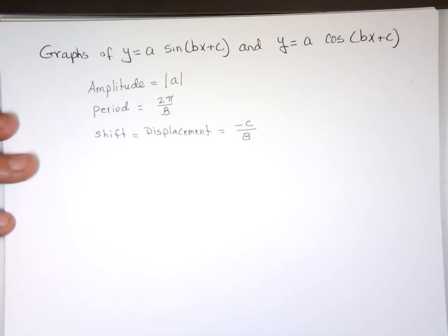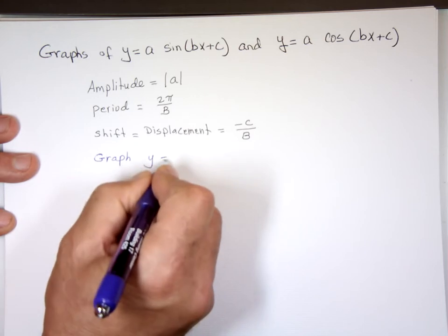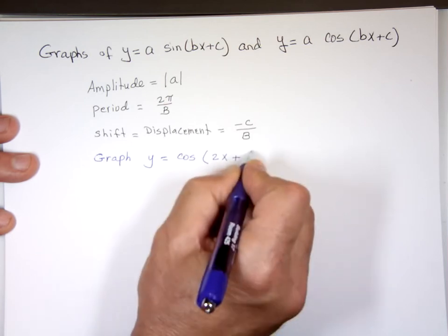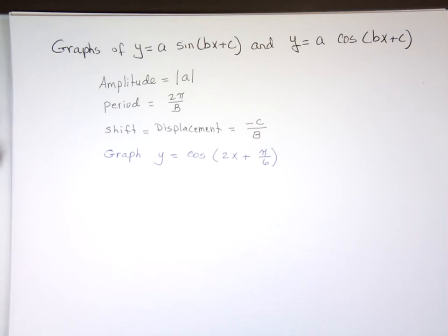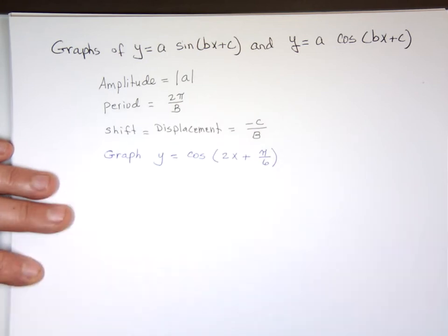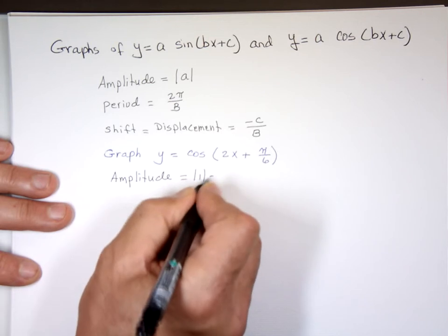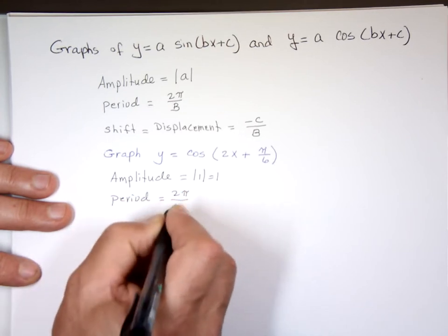Here's an example graph: y equals cosine of (2x + π/6). My amplitude is the absolute value of 1, which is 1. My period is 2π divided by B, which is 2, giving a period of π.